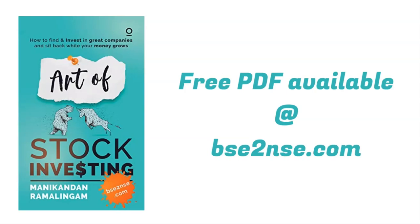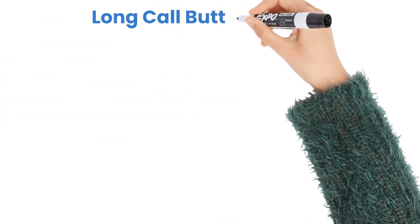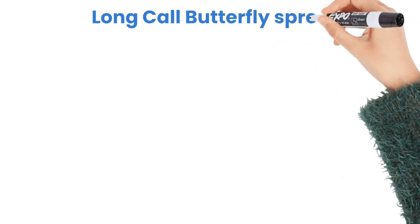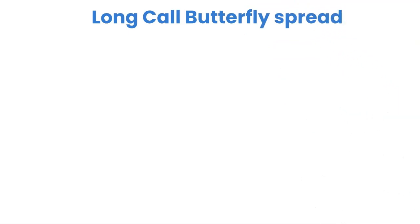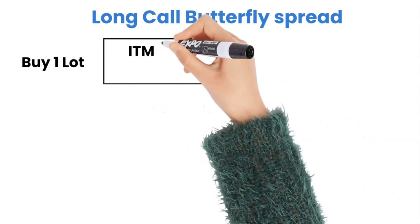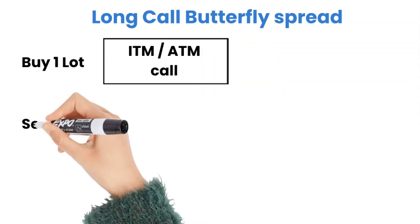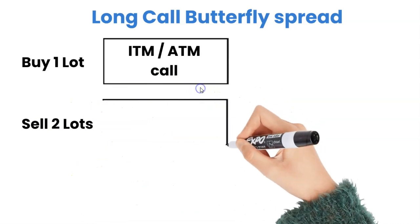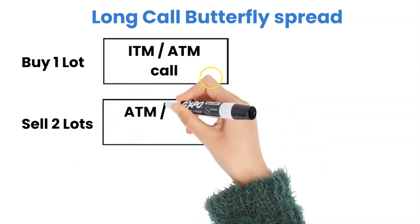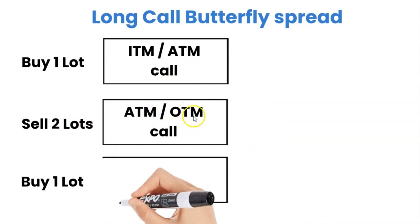Let's now get into the video topic — long call butterfly spread. This strategy is basically for traders who predict that markets, or a particular stock or index, are going to go up. The first leg is buying one lot of an in-the-money or at-the-money call. That is the core position. The next position — the second leg — is to sell two lots of at-the-money or out-of-the-money calls.